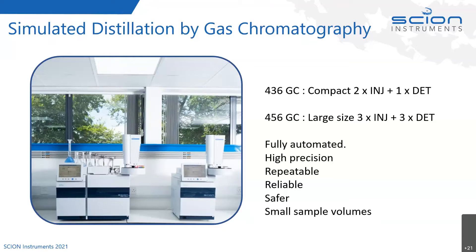The larger 456 GC can accommodate more detectors and injectors — three of each. The column oven size is almost twice the depth of the smaller 436.